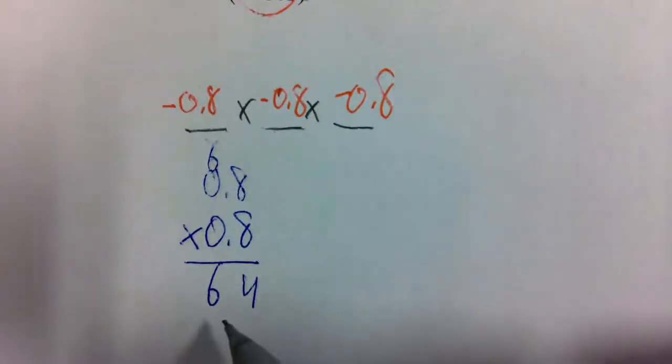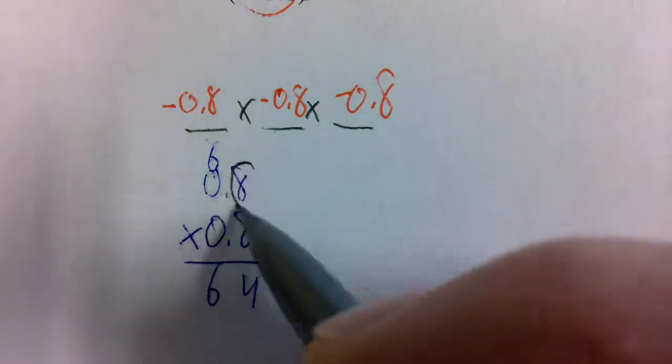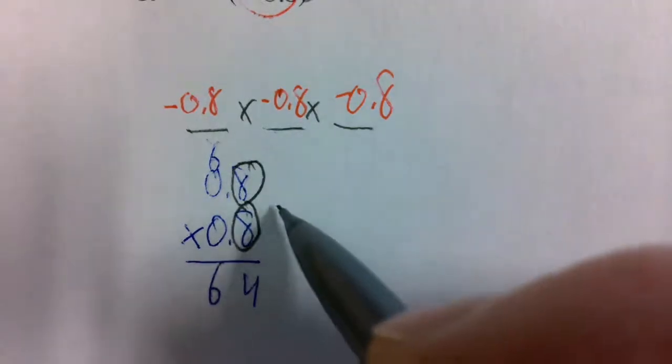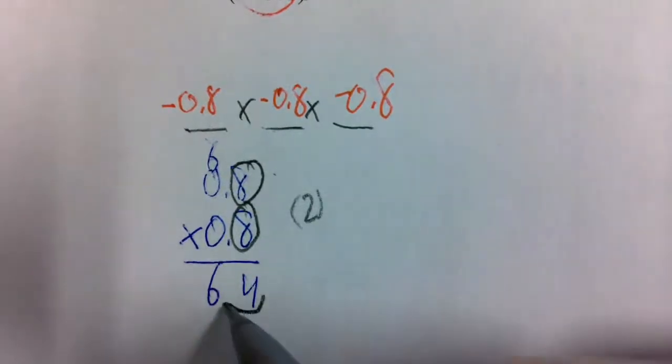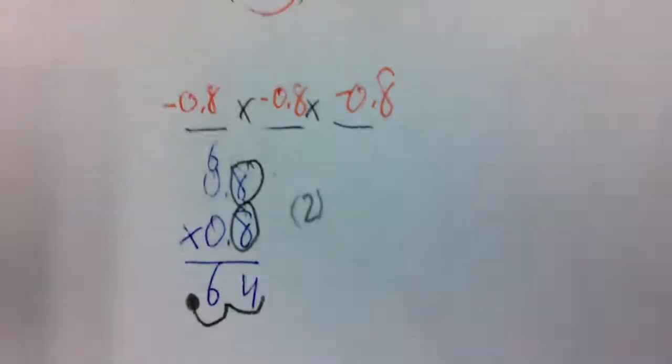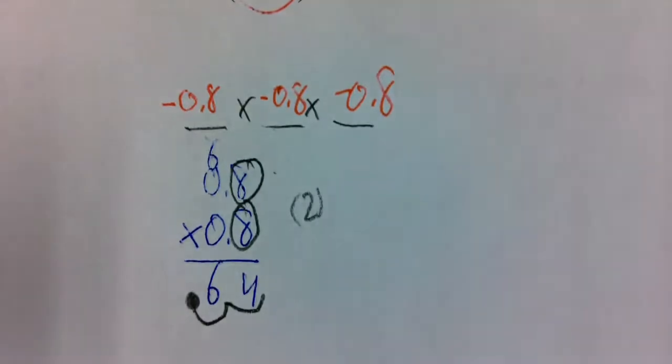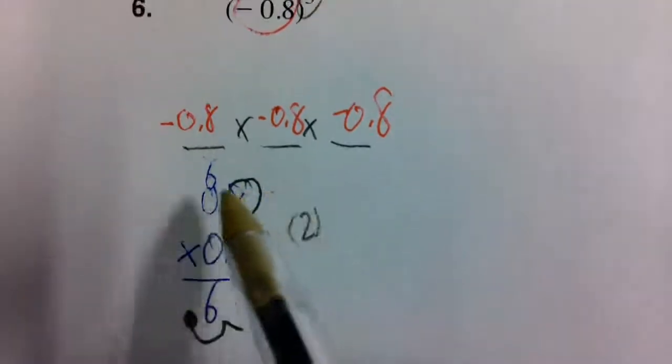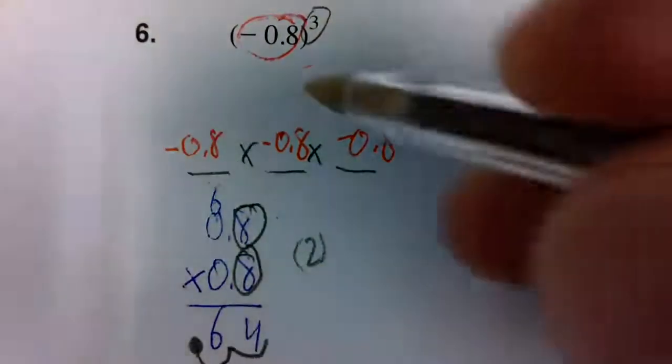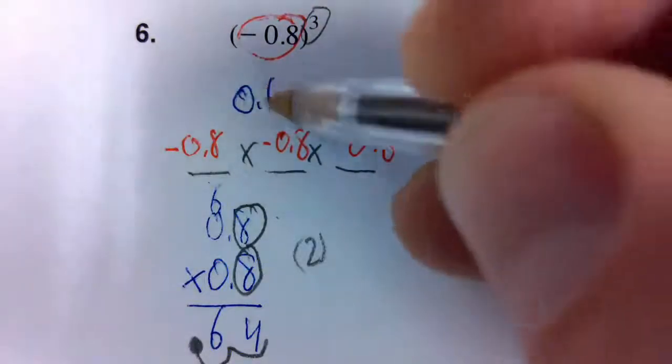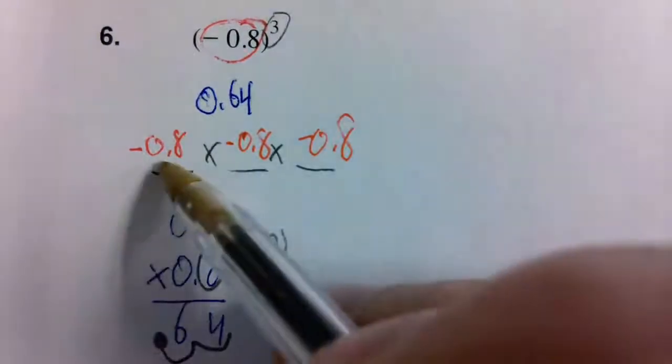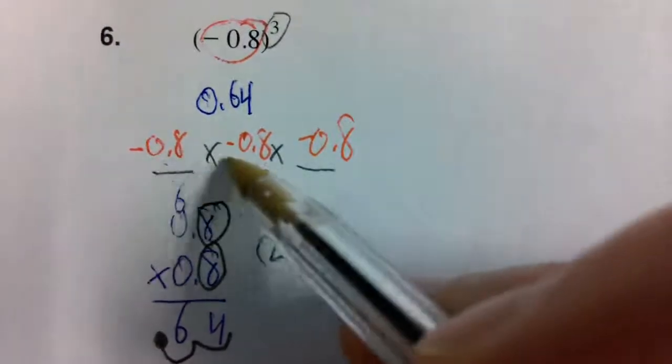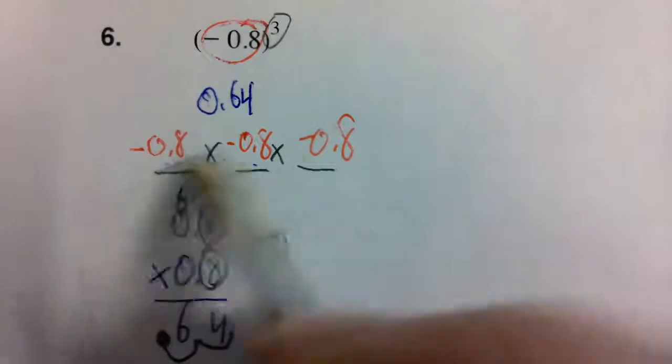Eight times eight is 64. It's not 64 and it's not 6.4. Count up the number of decimal places. Since there are two of them, your answer needs two decimal places. That's when you take -0.8 × -0.8, you get 0.64. Looking at these two, did they have the same sign? They did, so it's a positive.